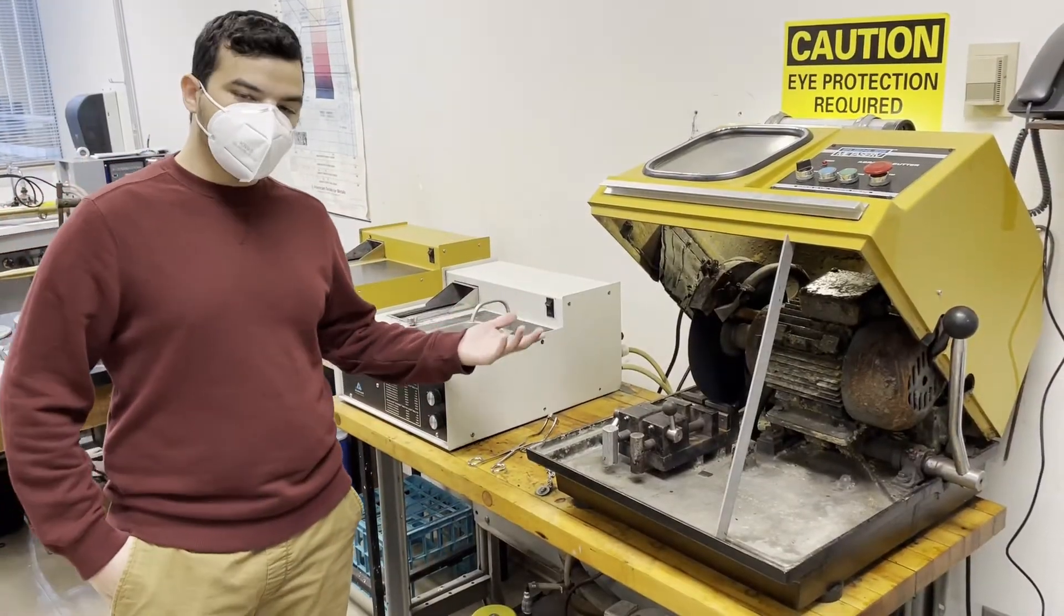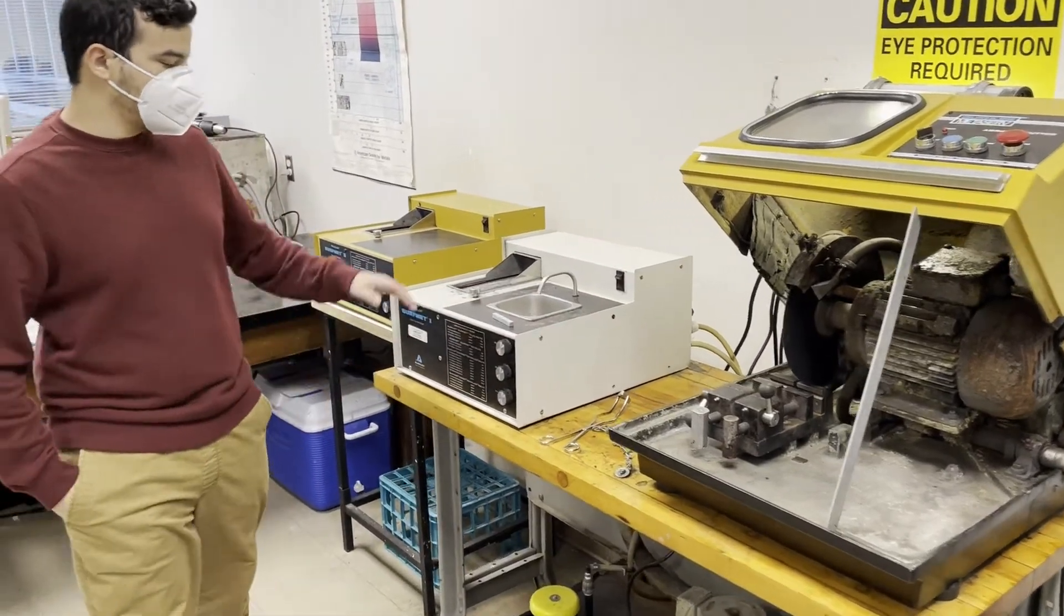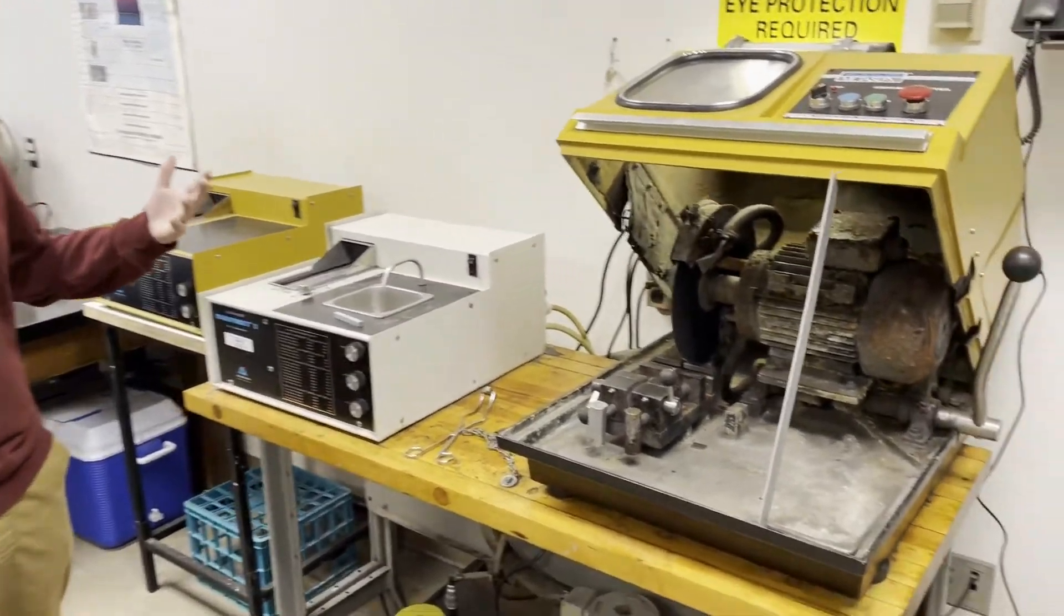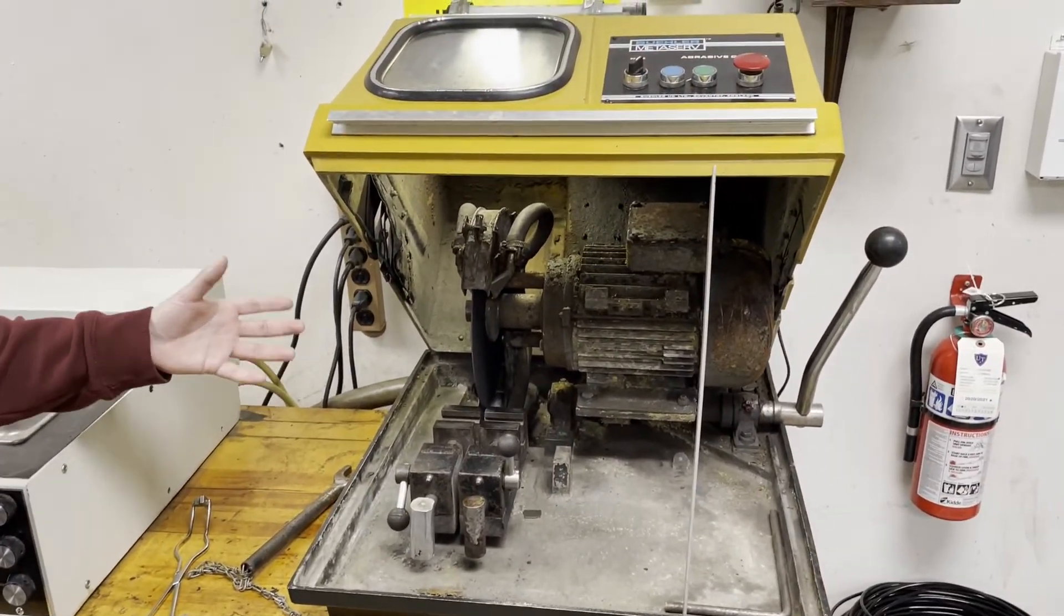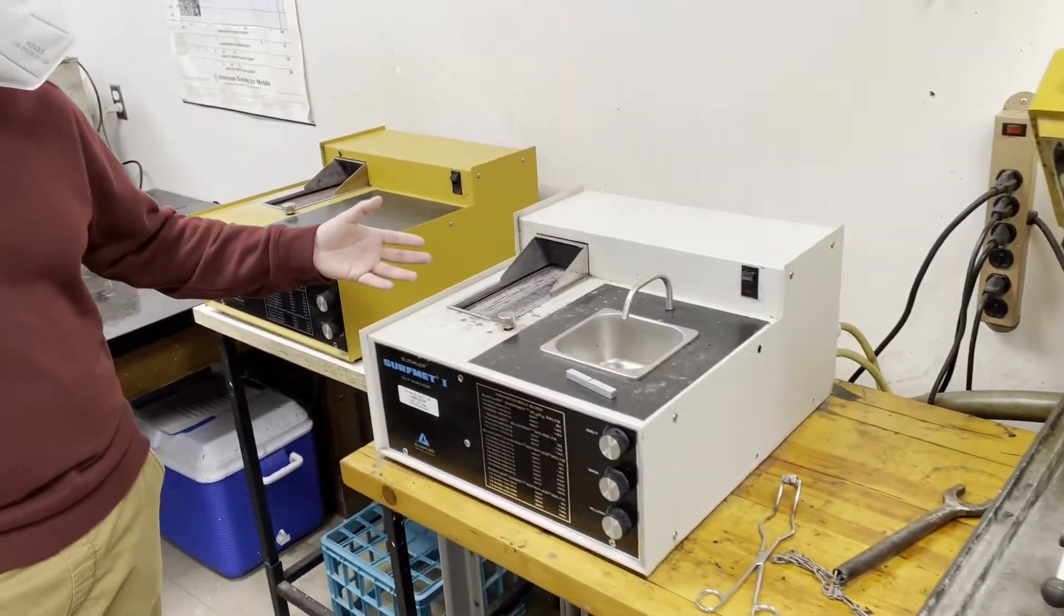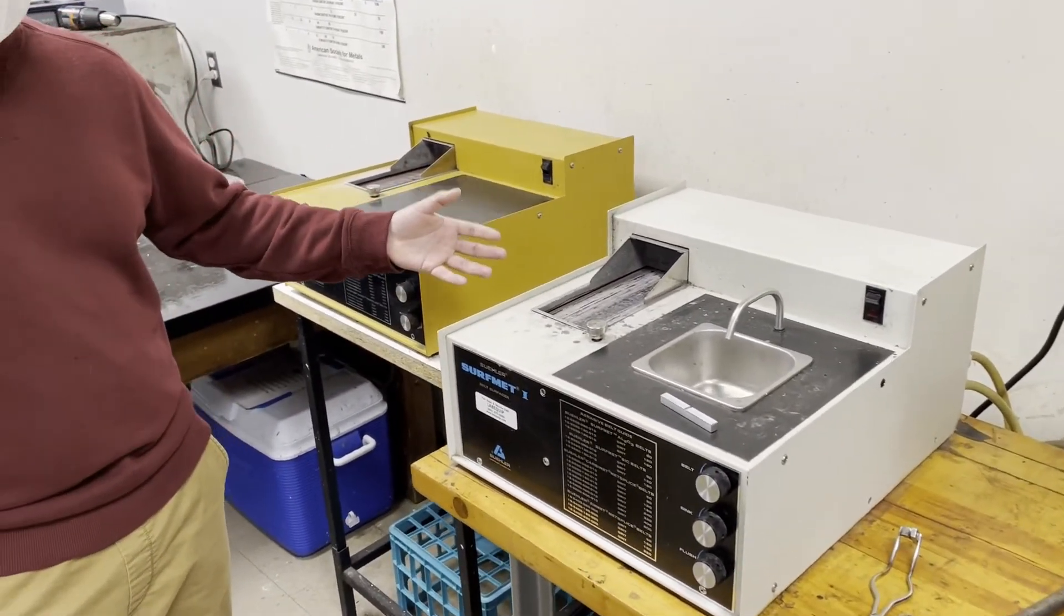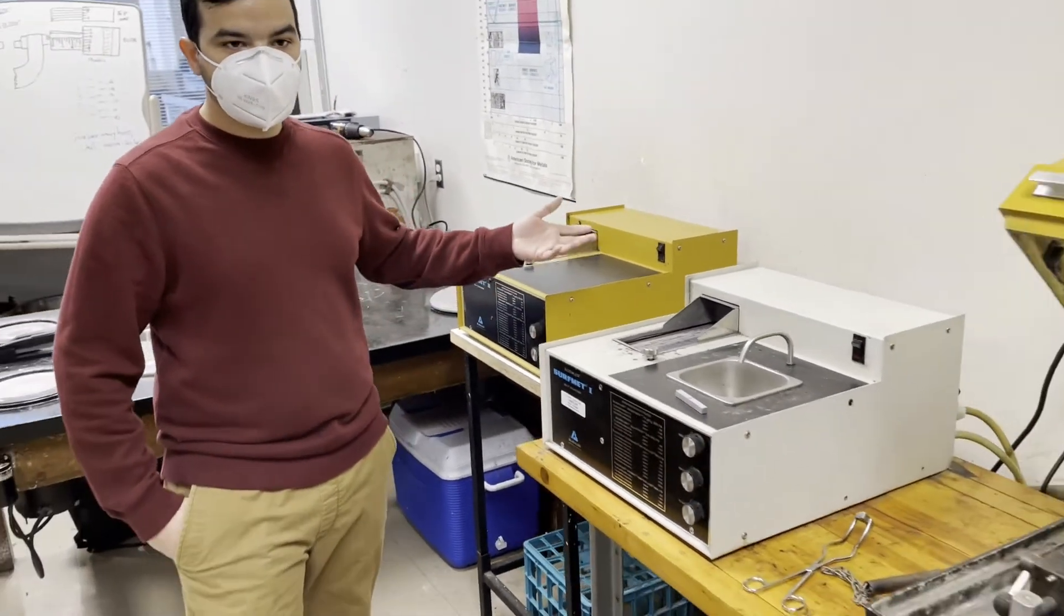Our first equipment that we're going to be looking at is our abrasive cutters and two belt sanders. These serve the purpose of cutting any type of coupons that we want to test or mount, as well as sanding out any debris or inconsistencies in our coupons.